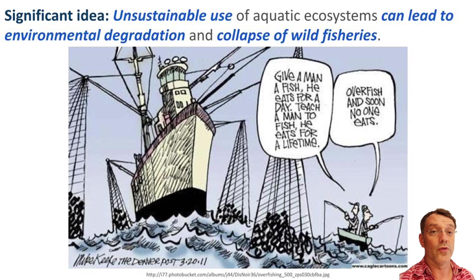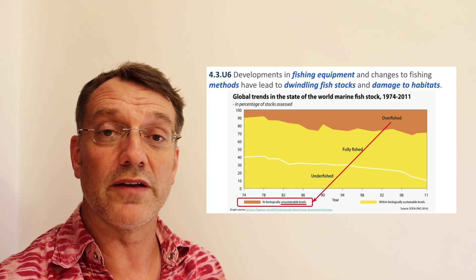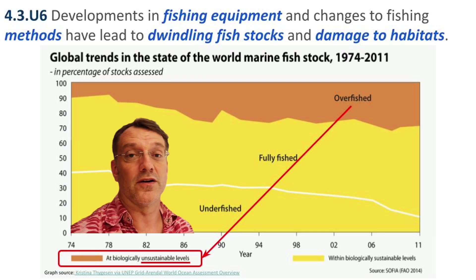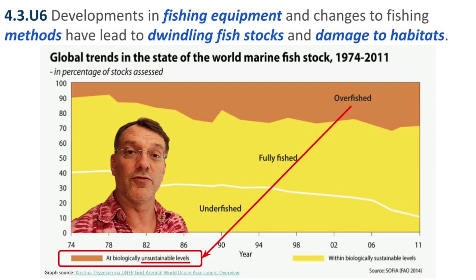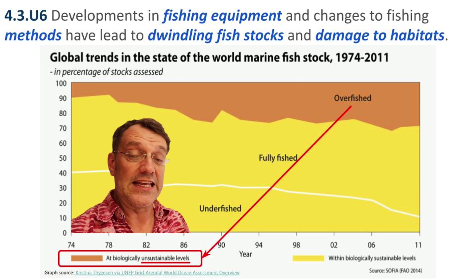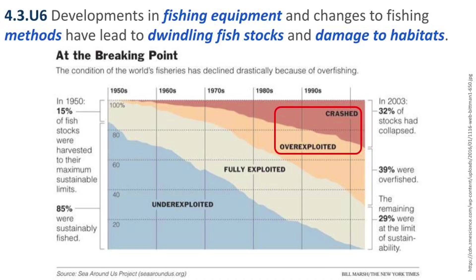Unsustainable use of aquatic food production systems can lead to their degradation and collapse. Changes in fishing equipment and habits have led to dwindling fish stocks and habitat damage. The graph shown represents sustainable versus unsustainable harvest globally in the late 20th and early 21st centuries. The orange portion represents unsustainable fishing — harvesting more fish than are produced each year. In ESS terms, this means the harvest of natural income exceeds what the natural capital generates. The wild fisheries are the natural capital; the new fish spawned each year are the natural income. As long as we harvest fewer fish than are born annually, we maintain those wild fisheries — but as the graph shows, that is not the case.